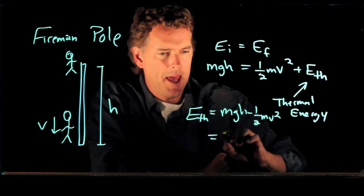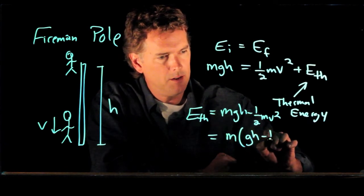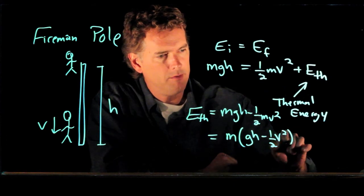And in fact, I could pull an M out of this equation and I can write it M times GH minus one half v squared.